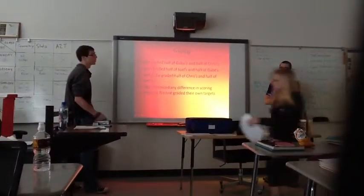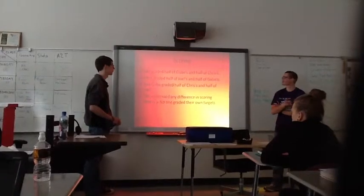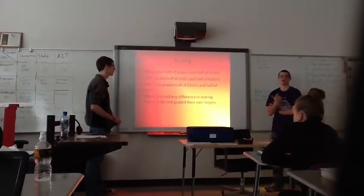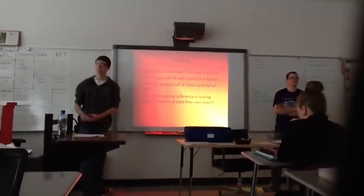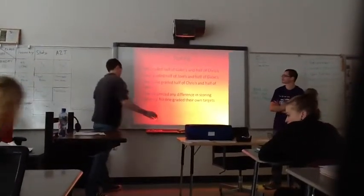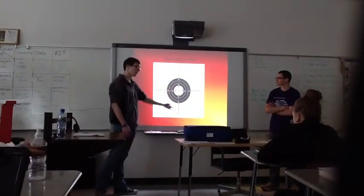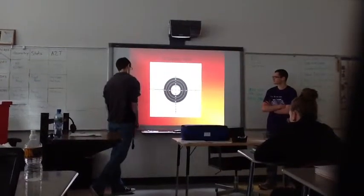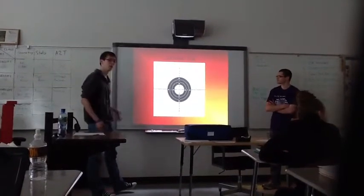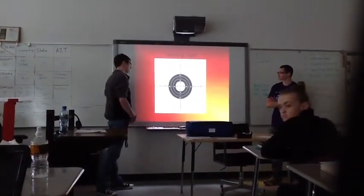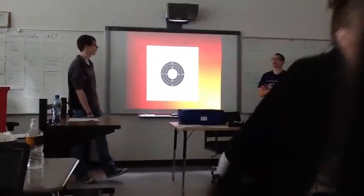For the scoring, to avoid any bias, no one graded their own paper. I graded half of Gabe's and half of Chris's. Chris graded half of Gabe's and half of mine. And Gabe graded half of Chris's and half of mine. This minimizes any difference in scoring in case anyone had different interpretations. The center was 10 points and so on. If you didn't hit the target or hit outside in the white, you got a zero for that bullet. We'd add up the score from each target, and if the bullet was on the line, you got the higher score.